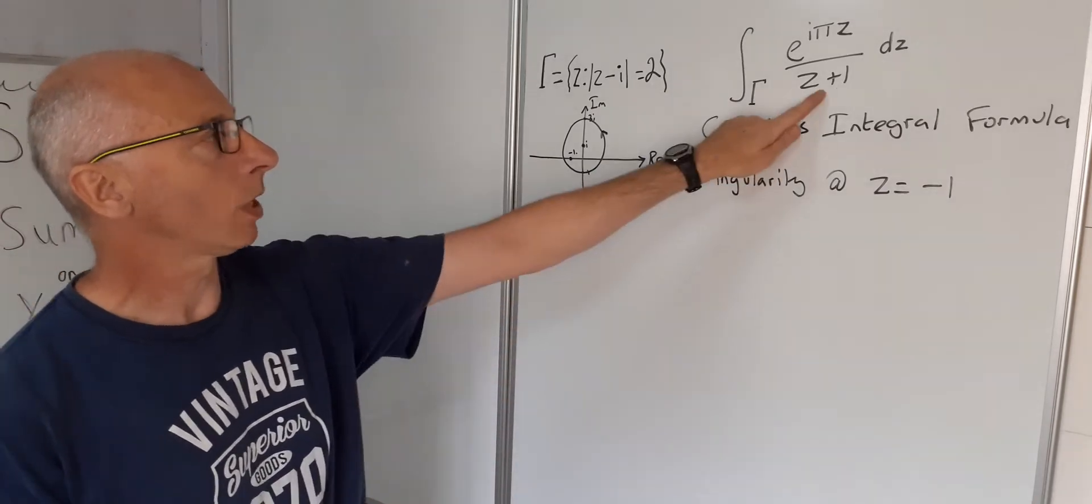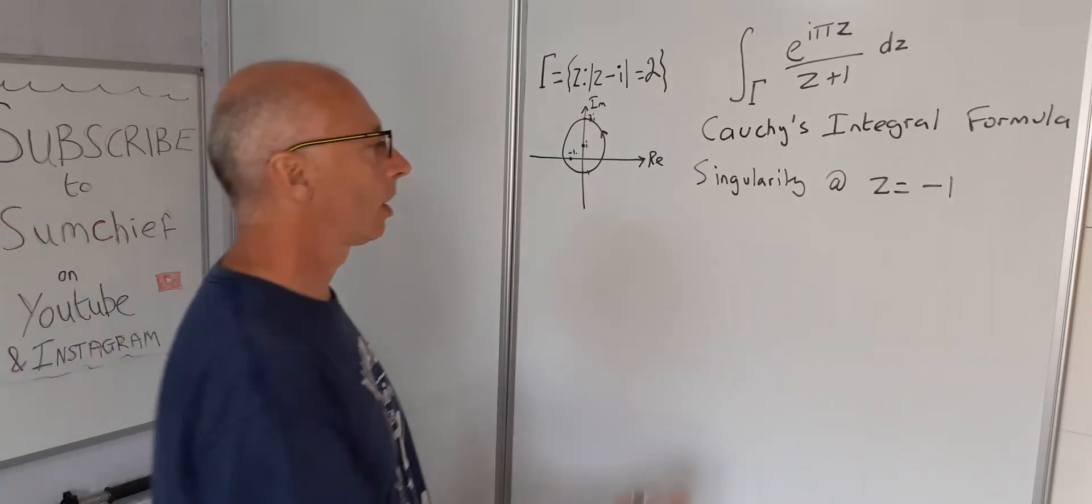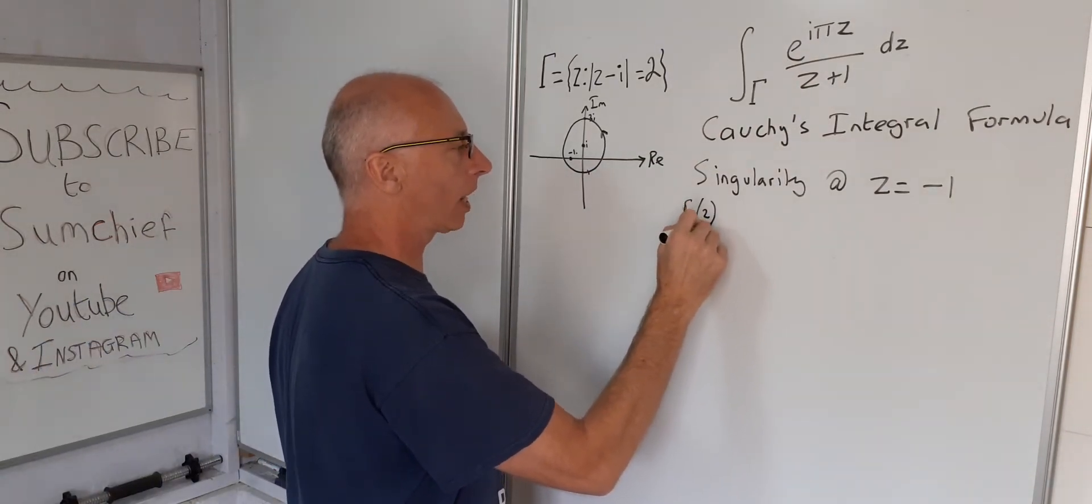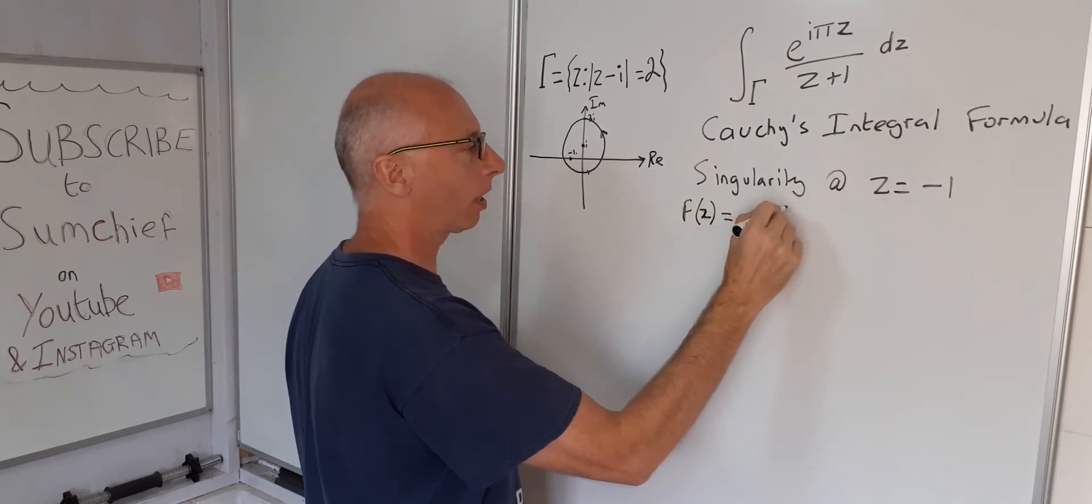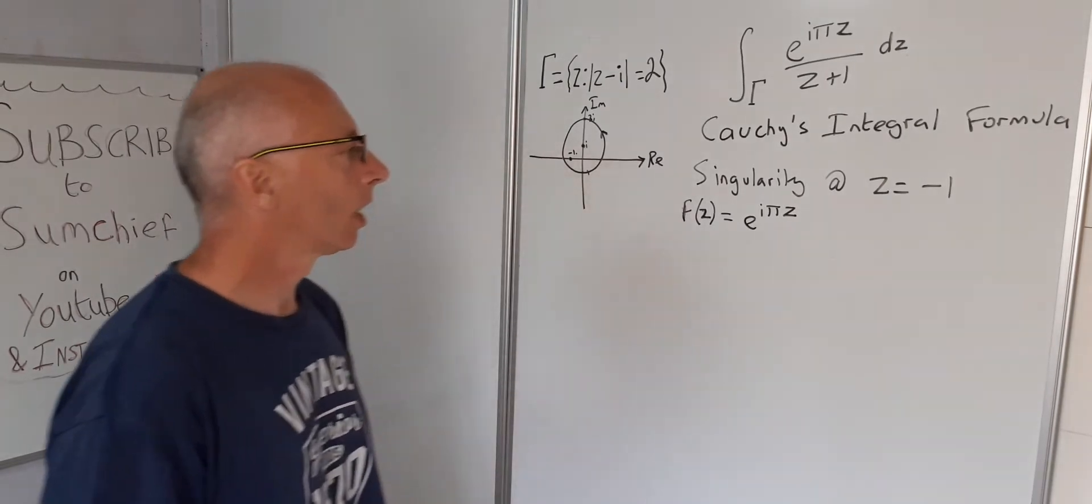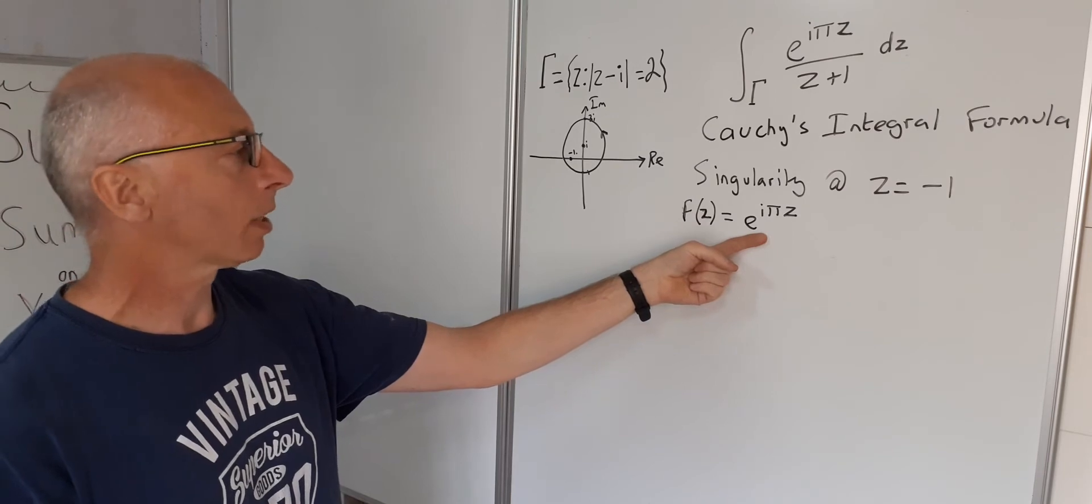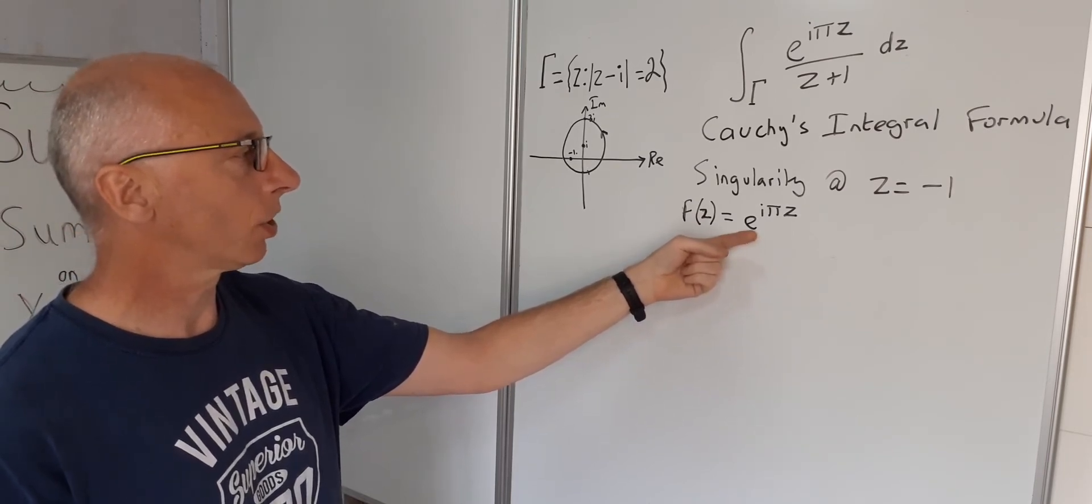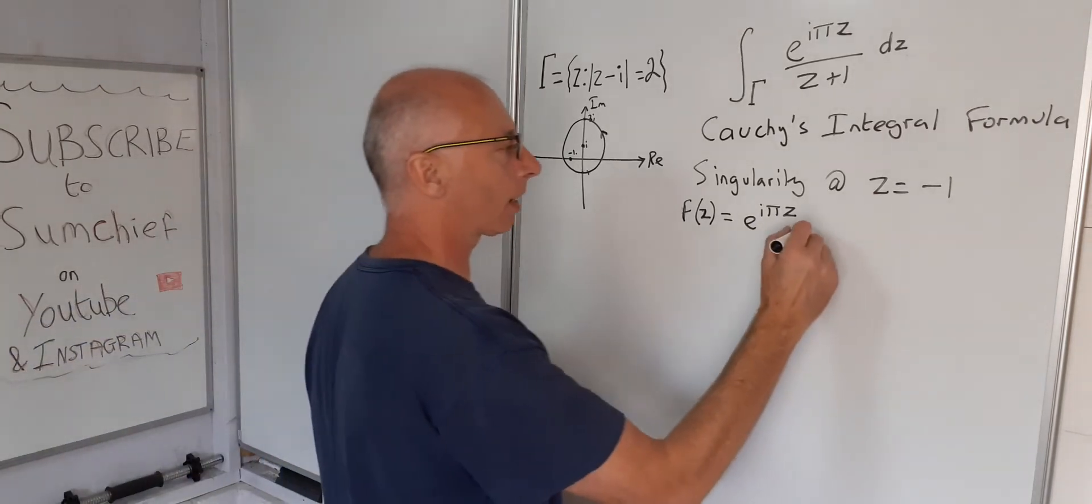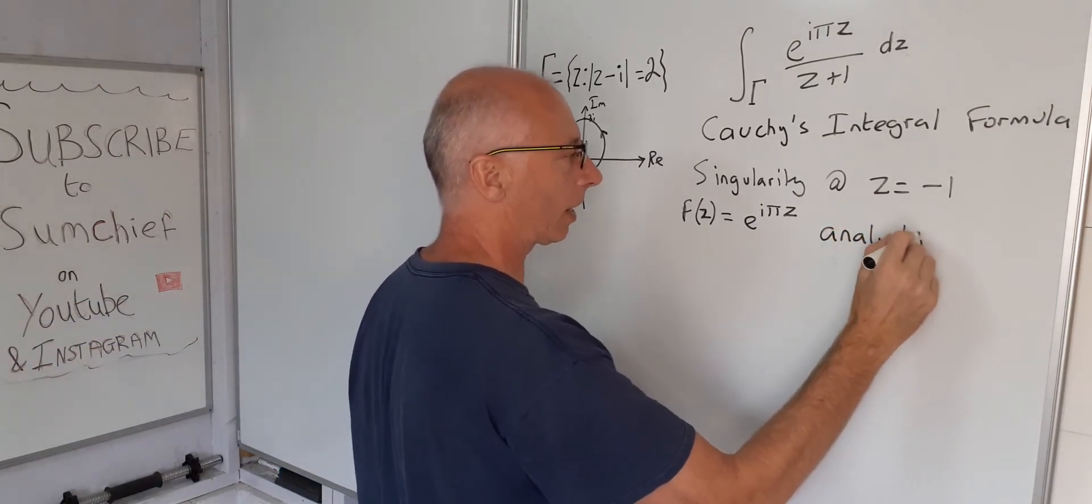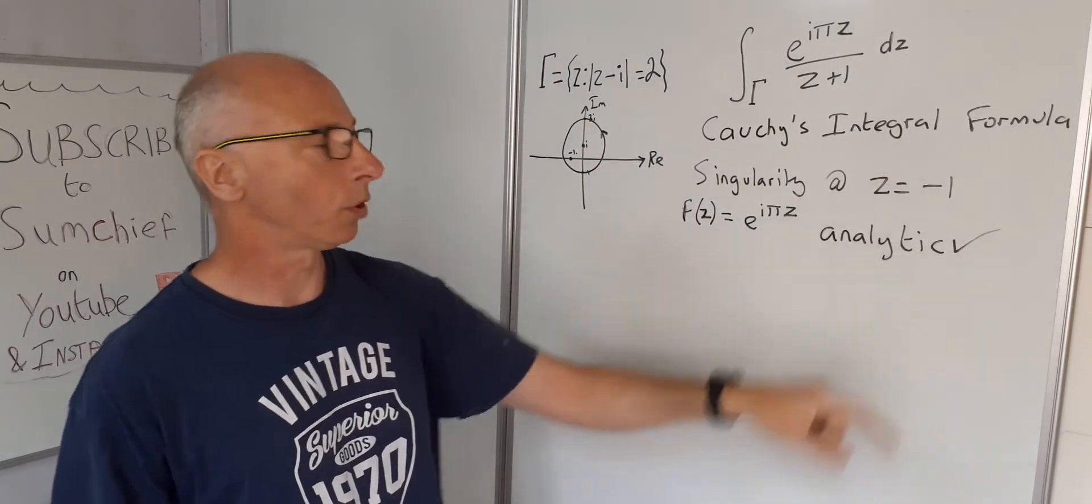So we can now sort of eliminate this and concentrate now on the numerator. So if we let F of Z equal E to the I pi Z, is this function here analytic on the complex plane? Well, the exponential function is continuous everywhere and we can differentiate it everywhere. So this is analytic. So that's the last of the conditions really for Cauchy's integral formula.